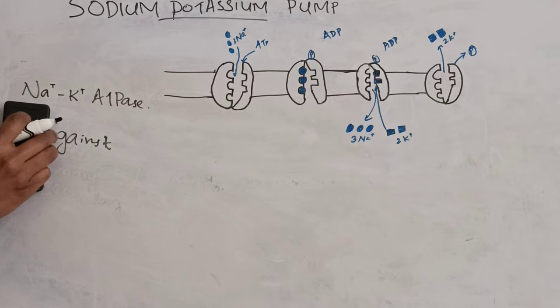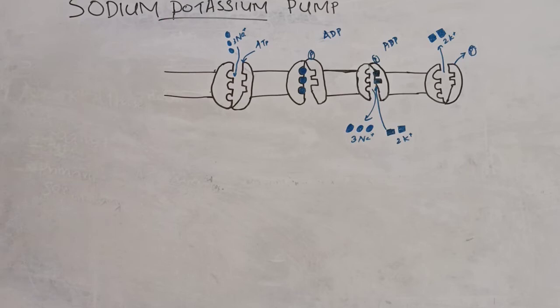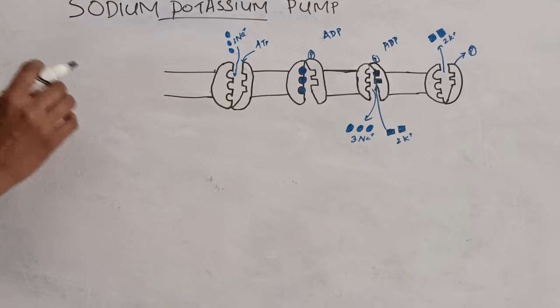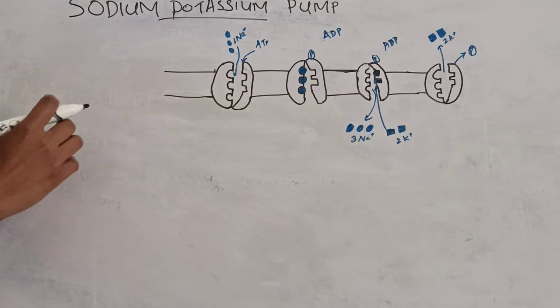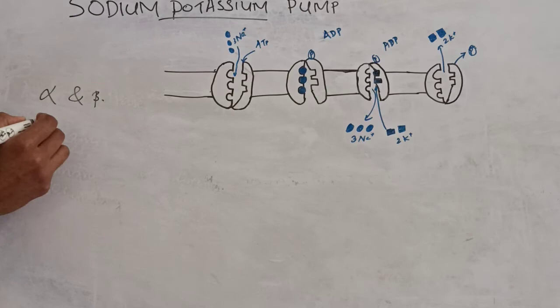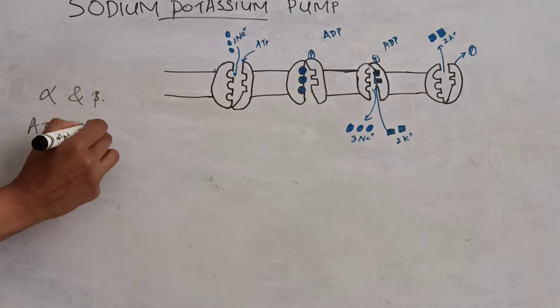Let's see the mechanism. The sodium-potassium pump maintains the sodium-potassium concentration difference across the cell membrane. Coming to the structure, it has two subunits: alpha and beta subunits. The alpha subunit binds ATP, then sodium and potassium. The beta subunit is necessary for the activity of the complex.